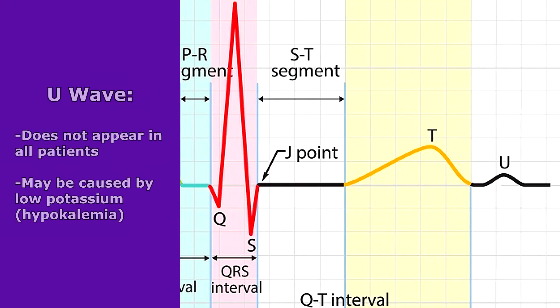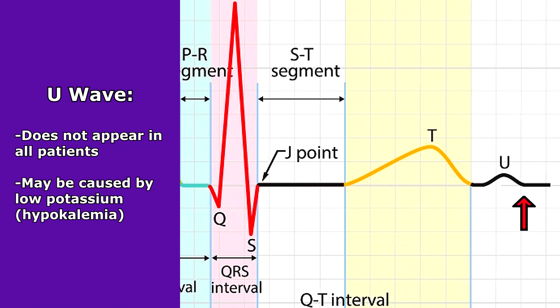Sometimes after the T wave, you may see a U wave. It's not the case in a lot of patients, but in some. It may be happening because your patient's potassium level is low, as in hypokalemia.